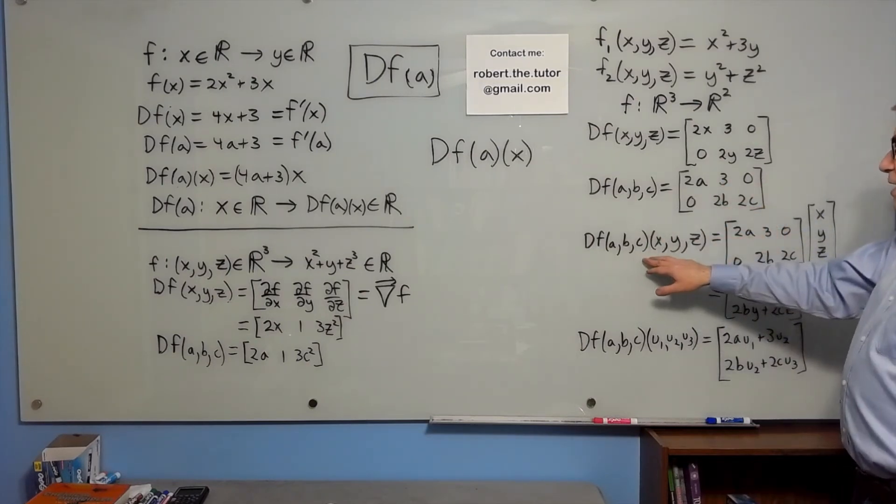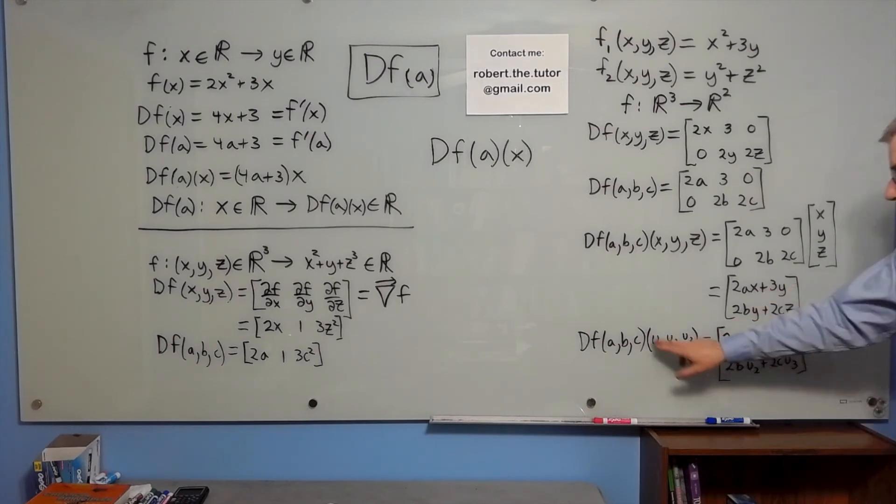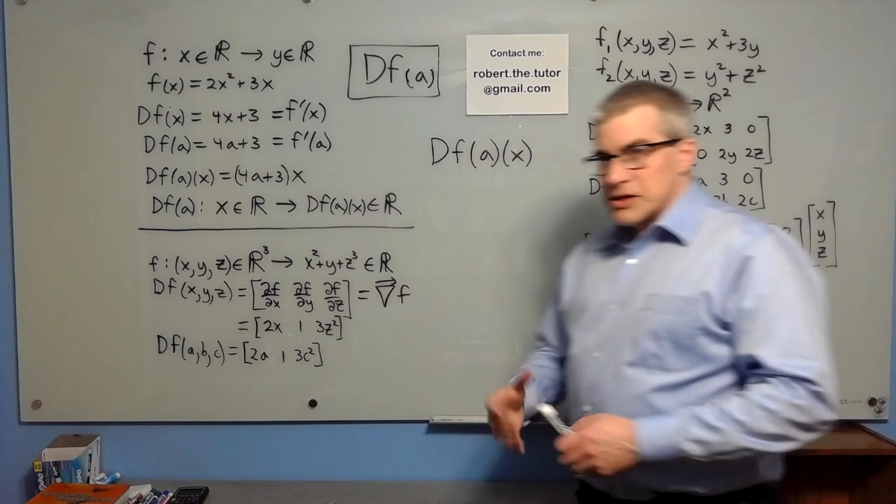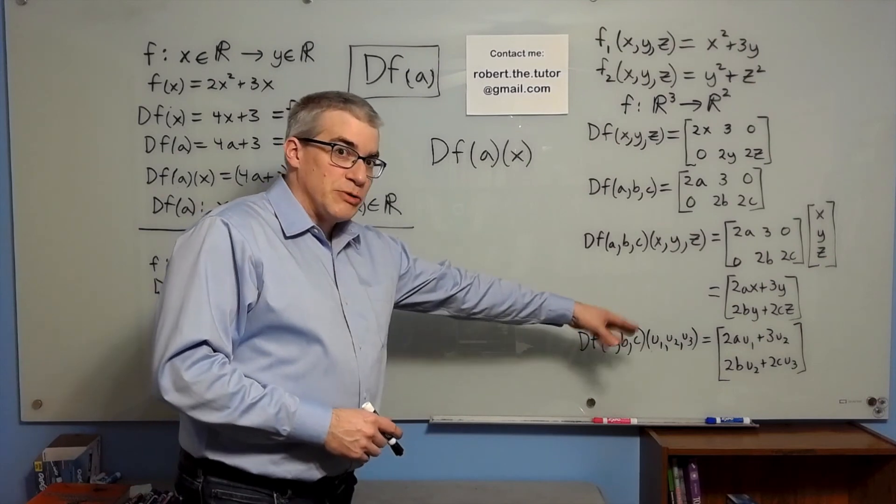Then what happens when we multiply that by x, y, z, the vector, we have this matrix times this vector, and we get a two vector. If we put in a unit vector with components u1, u2, u3, we get this expression. What does it mean? This is the directional derivative in the u1, u2, u3 direction of the first component. And this is the directional derivative in that same direction of the second component. So that's a meaning for df of a, b, c, and df of a, b, c, u1, u2, u3.